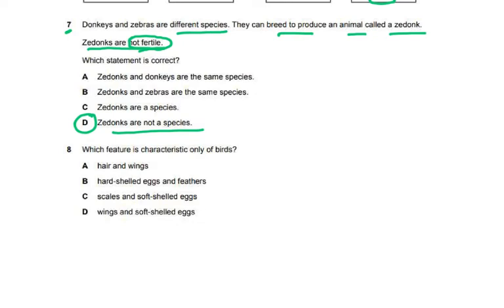Question eight: which feature is characteristic only of birds? The choices are hair and wings, hard-shelled eggs and feathers, scales and soft-shelled eggs, or wings and soft-shelled eggs. We have all seen birds' nests with hard-shelled eggs. Birds have feathers and fly because of them, and they have lightweight bones. The answer is B: hard-shelled eggs and feathers.